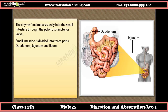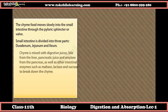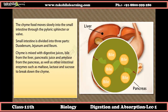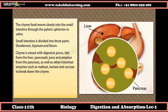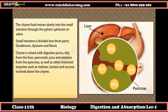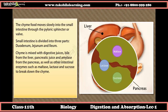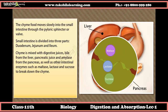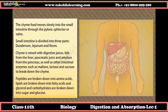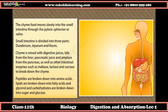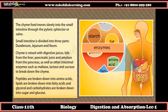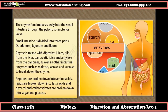In the small intestine, chyme is mixed with digestive juices including bile from the liver, pancreatic juice, and amylase from the pancreas, as well as other intestinal enzymes such as maltase, lactase, and sucrase. Peptides are broken down into amino acids, lipids are broken down into fatty acids and glycerol, and carbohydrates are broken down into sugars and glucose.